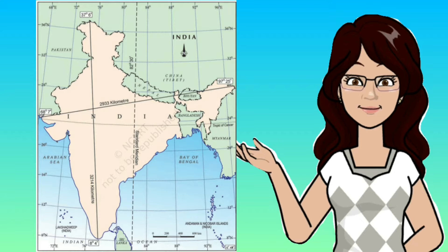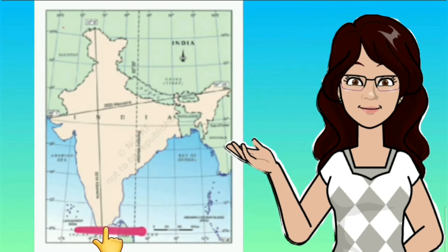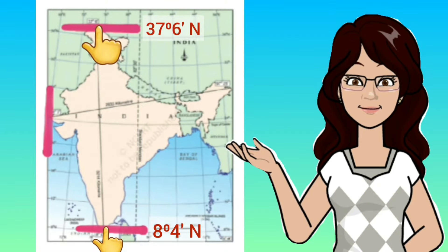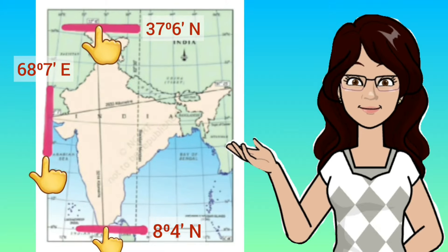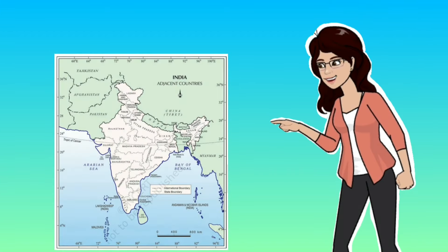The latitude touching the southernmost point of India is 8 degrees 4 minutes north, and the northernmost latitude is 37 degrees 6 minutes north. Coming to the longitudinal extent, the longitude touching the westernmost point is 68 degrees 7 minutes east, whereas the longitude touching the easternmost part of the country is 97 degrees 25 minutes east.